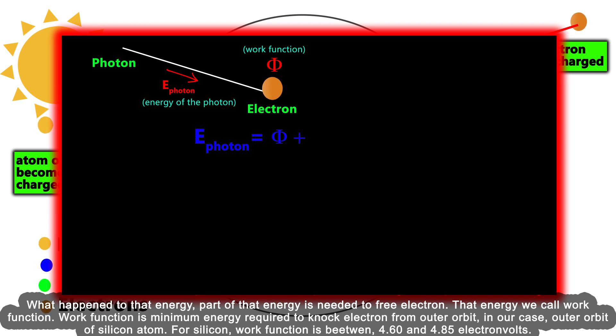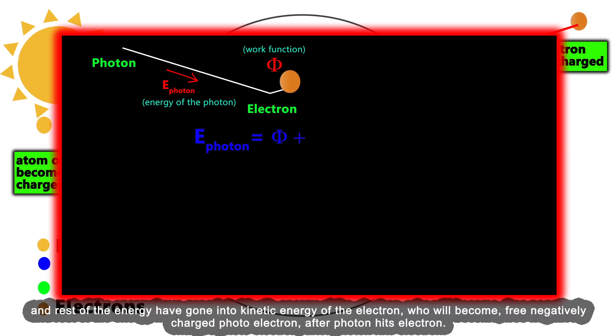In our case, the outer orbit of a silicon atom. For silicon, the work function is between 4.60 and 4.85 electron volts. The rest of the energy goes into kinetic energy of the electron, which will become a free negatively charged photoelectron after the photon hits the electron.